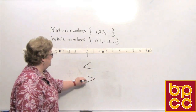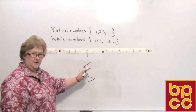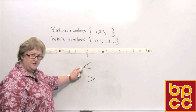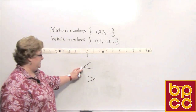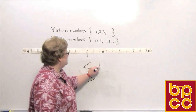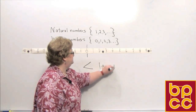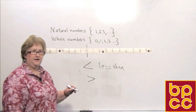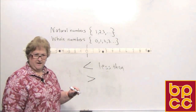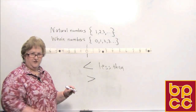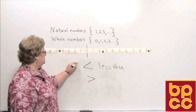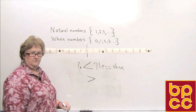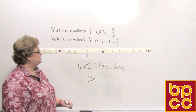Now let's look at some inequality signs. Let's begin with the less than symbol. As we read left to right, you come to the point first, so this sign says 'less than.' Let's create a true statement using two numbers: six is less than seven.